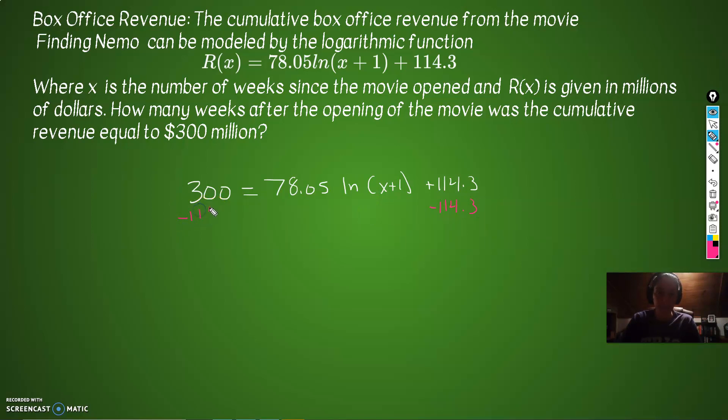What is 300 minus 114.3? 185.7 equals 78.05 times ln(x+1). All right, we got a little more clutter to clear out, and it's getting rid of this 78.05.